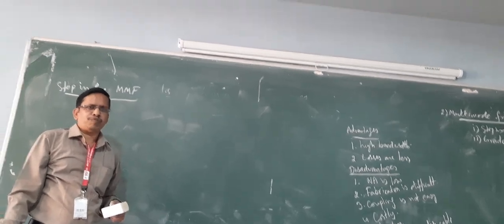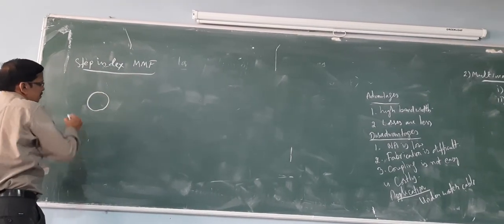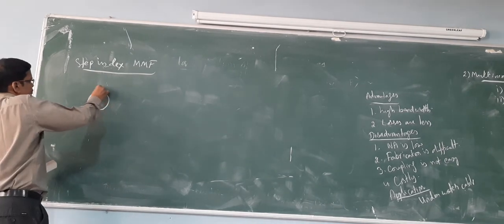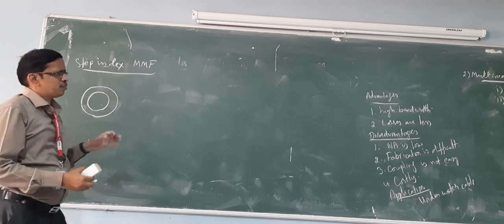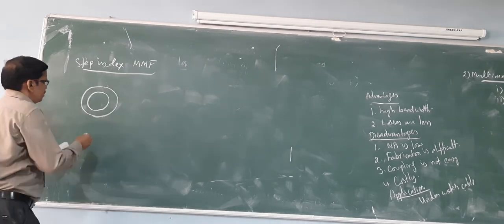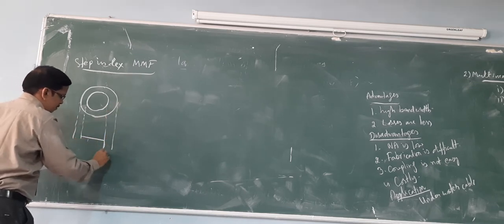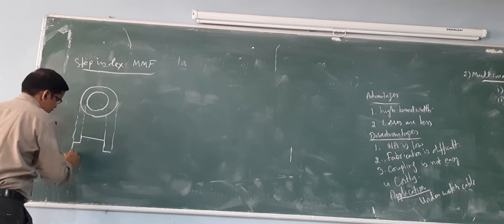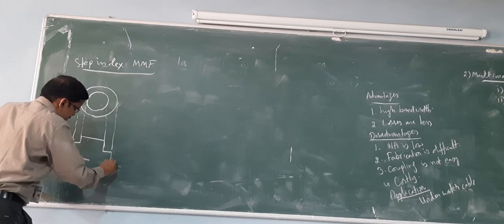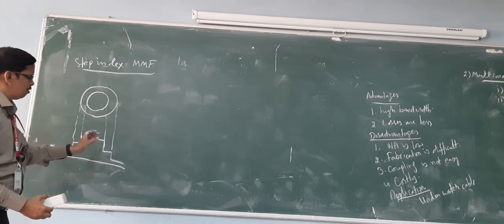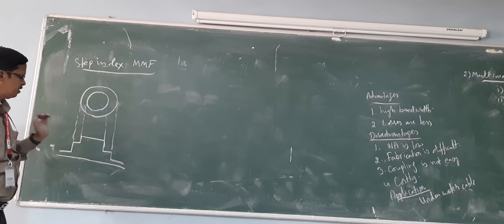The step-index multi-mode fiber is similar to the step-index single-mode fiber. The only difference is in the core diameter — in this case the core diameter will be large compared to the single-mode fiber. Because of the large core diameter it supports more than one mode of propagation. The index profile of this fiber is similar to that of a single-mode fiber.